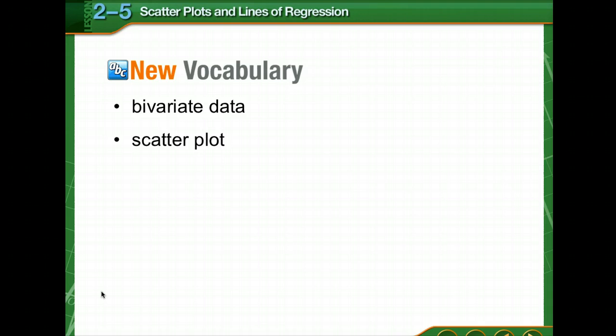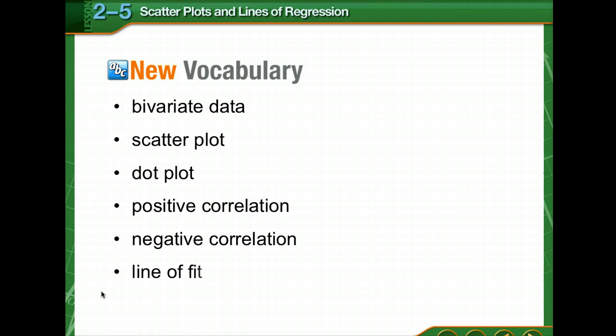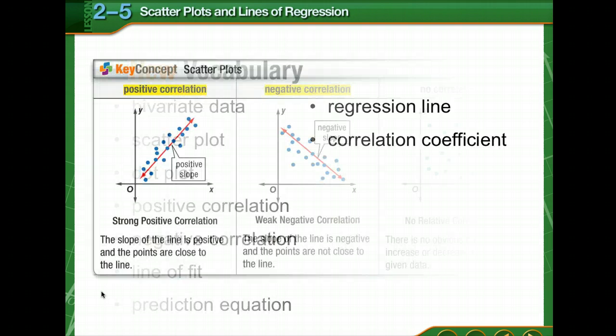A scatter plot can show whether there is a positive, a negative, or no correlation between two variables. So positive, negative, then there's the line of fit. We'll discuss that today. A prediction equation, a regression line, correlation coefficient.